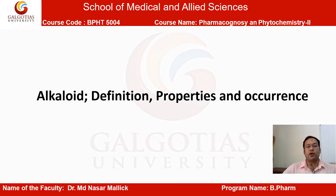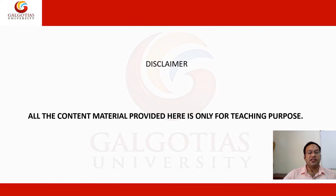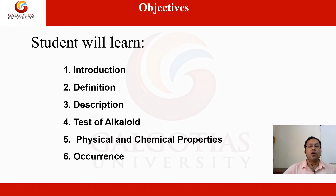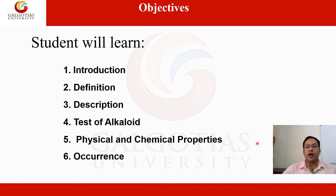In this slide, you will learn about alkaloids: their definition, properties, and occurrence. All student content material provided here is only for teaching purposes. The pre-recapitulation covers what alkaloids are, their chemistry, and their properties. The objectives include introduction, definition, description, tests of alkaloids, physical and chemical properties, and occurrence of alkaloids.